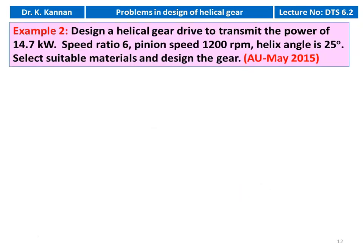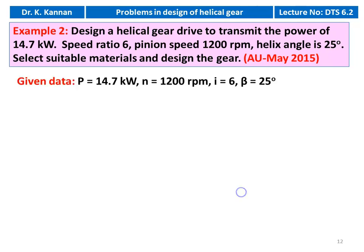Example 2 from May 2015 question paper: Design a helical gear drive to transmit 14.7 kW, speed ratio = 6, pinion speed = 1200 RPM, helix angle β = 25°. Select suitable material and design the gear drive. Given: power = 14.7 kW, pinion speed = 1200 RPM, speed ratio i = 6, helix angle β = 25°.